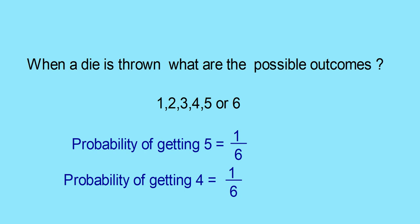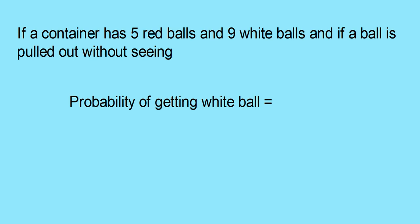So to find the probability, you find the total outcomes and the number of favorable outcomes. For example, if a container has 5 red balls and 9 white balls, and a ball is pulled out without looking, what is the probability of getting a white ball? Total balls are 9 plus 5, that is 14. Out of which, 9 are white. So the probability of getting a white ball is 9 by 14. This is the way you find out the probability of an event.